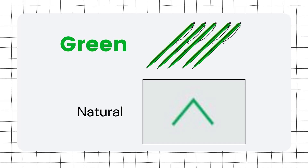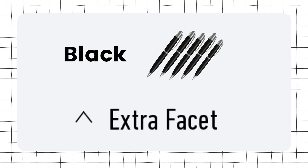Green color is used for indicating naturals. Naturals are basically features that occurred naturally and are already present inside a stone in its raw format. The final color is black, which indicates extra facets.